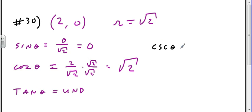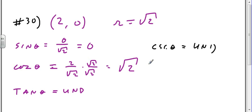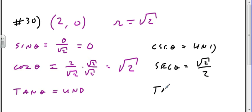Cosecant: dividing by 0, so undefined. Secant: 1 over the square root of 2 — rationalize the denominator to get square root of 2 over 2. And cotangent would be 0.